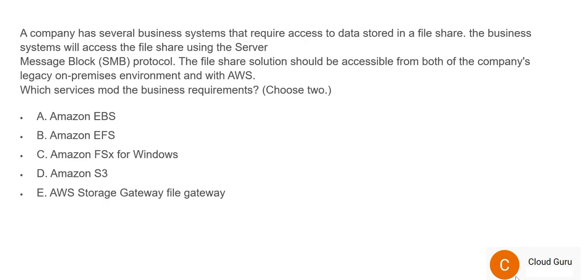Let's look at question 68. Please pause the video and mark your keywords. We need to choose two answers from five options. The story involves a requirement for a file share using SMB protocol. Thumb rule: SMB always means Windows — it never means Linux. Whenever you see Windows and a file share requirement, FSx for Windows is the first answer.